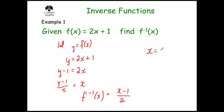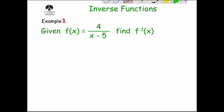Let's verify: say x = 10. Then 2 × 10 = 20, plus 1 = 21. Now put 21 into the inverse: 21 − 1 = 20, divided by 2 = 10. It works! So the method is: let y equal the function given, make x the subject, then write f⁻¹(x) equal to that expression with y replaced by x.